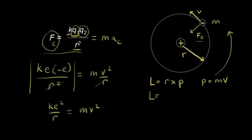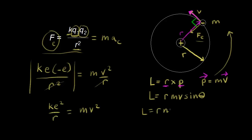The angular momentum about the center: R is a vector — the distance from the center to where our electron is. This is the R vector. This is a cross product, so we have R times the linear momentum P, which is MV, times the sine of the angle between the two vectors. The momentum vector is in the same direction as the velocity. The angle between those two vectors is 90 degrees, and sine of 90 is one. So the angular momentum equals R M V.